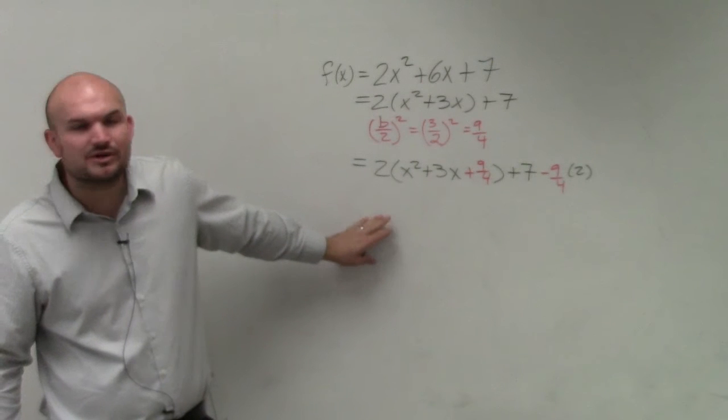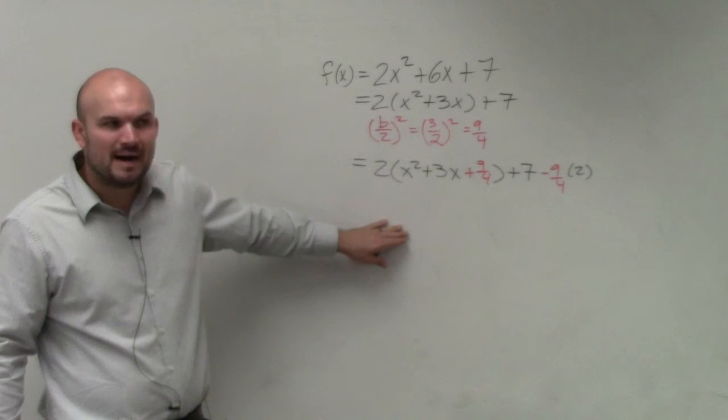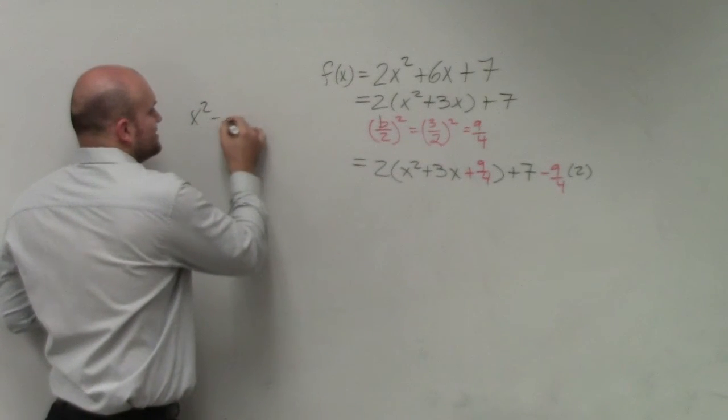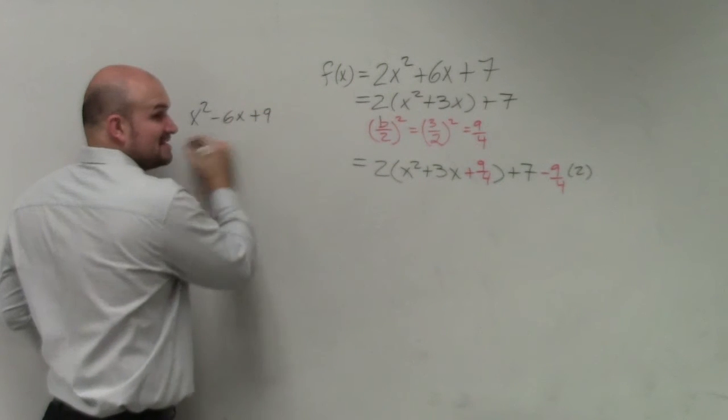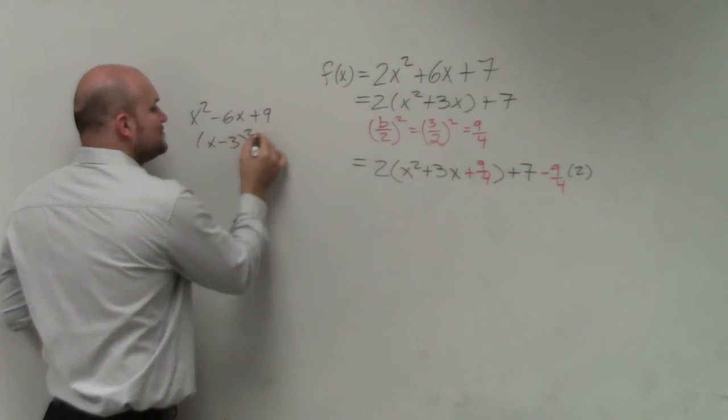Why are perfect square trinomials so helpful? Because they can always be factored down to binomials squared. Remember, we kind of practiced this like x squared minus 6x plus 9. That's a perfect square trinomial. It can be factored down to a binomial squared.